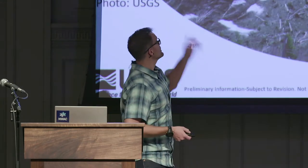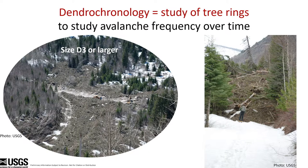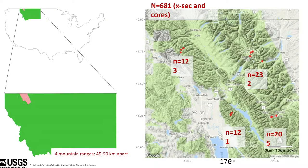When we talk about large magnitude avalanches, we're talking about size D3 or larger — pretty big slides for those familiar with the destructive scale. The work I'm going to talk about today is mostly focused in northwest Montana. How many folks have been to and around Glacier National Park? You're the ones contributing to all of the visitors in the summertime and taking up all of my bandwidth. Thanks.